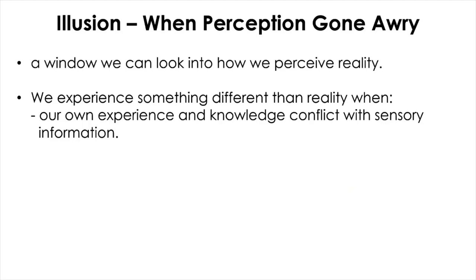So the previous illustration with checkerboard is an example of visual illusion that happens when our perception of objects differs from their physical characteristics. Historically, vision scientists have been fascinated by these illusions because they are fun to look at, first of all. But more importantly, they can provide a window to look into how we perceive reality. So there are a number of instances when we experience such illusions. First, the illusion occurs when our own experience and knowledge conflict with sensory information.